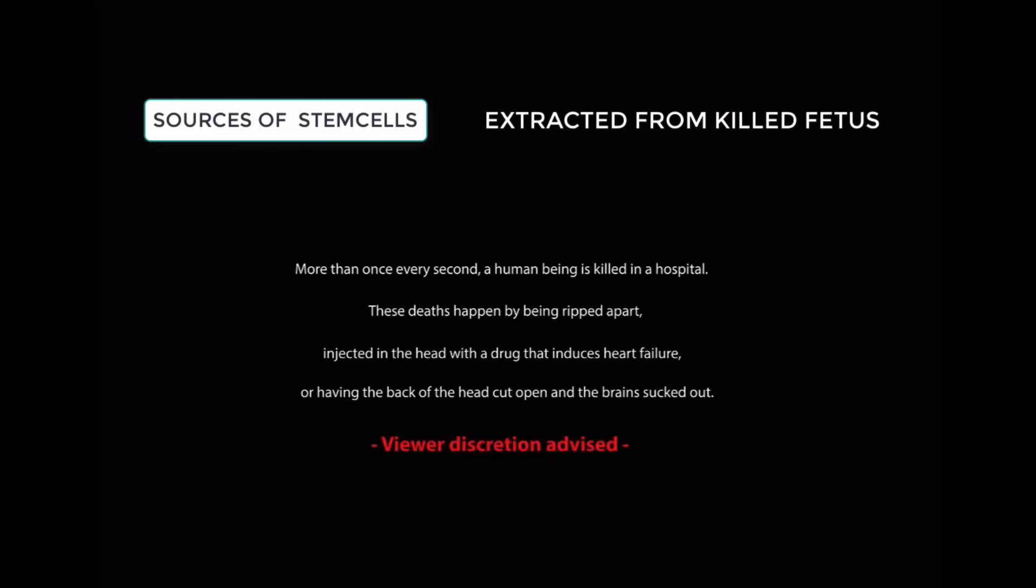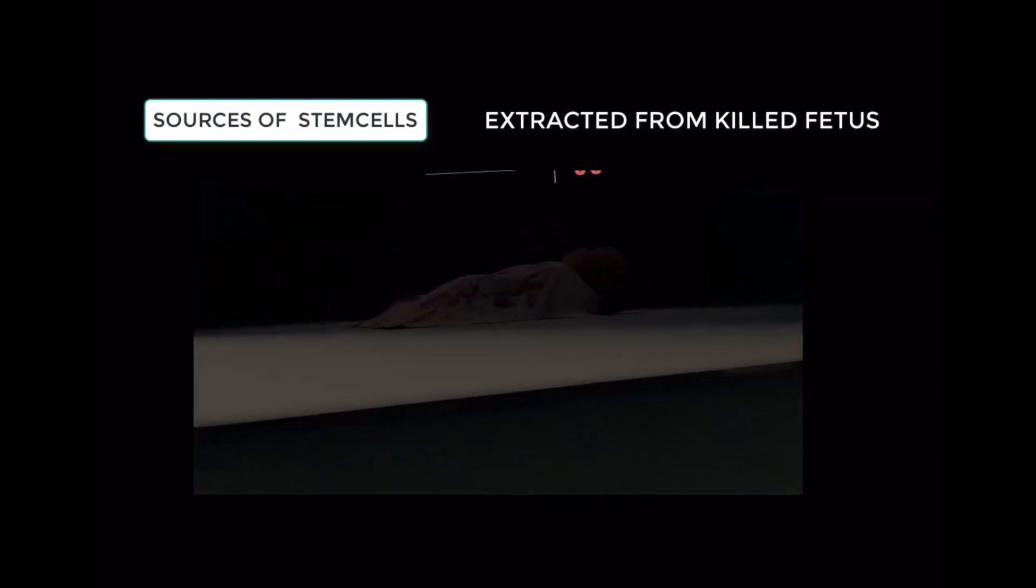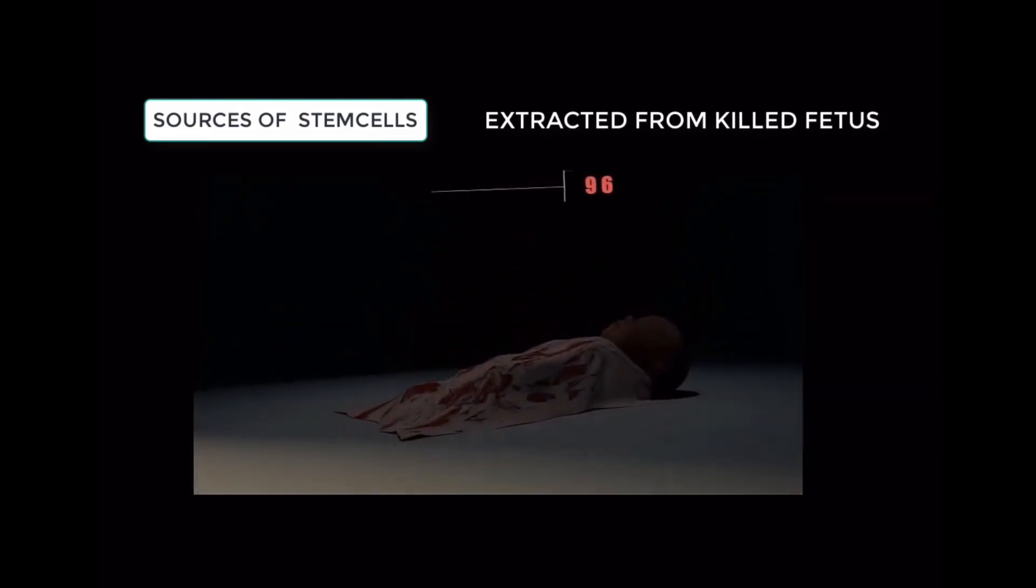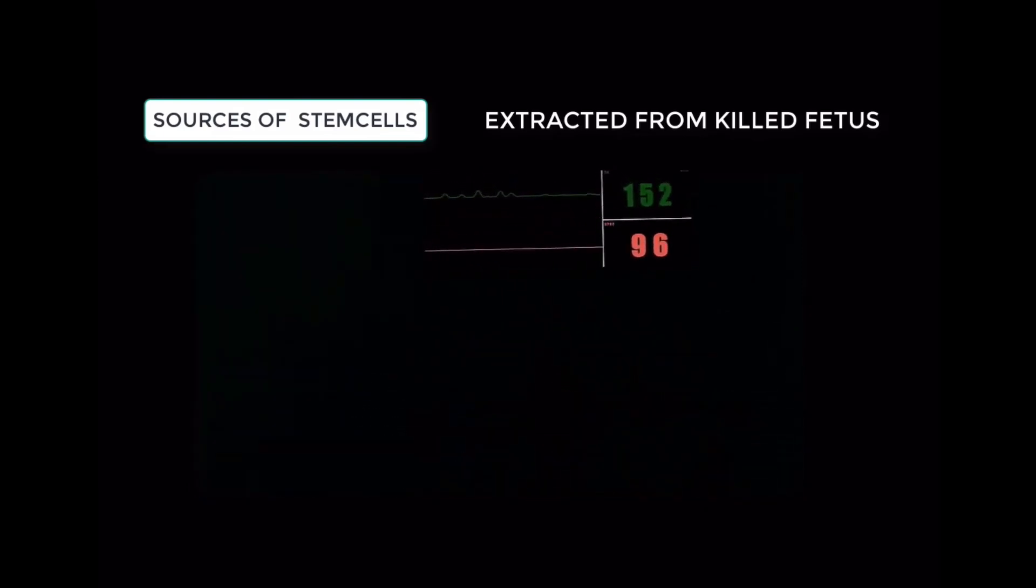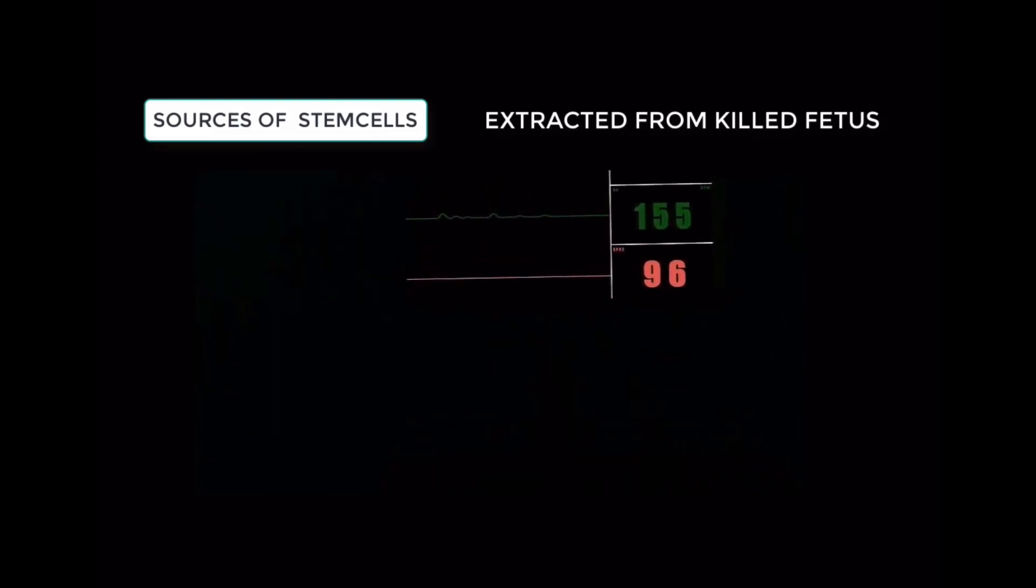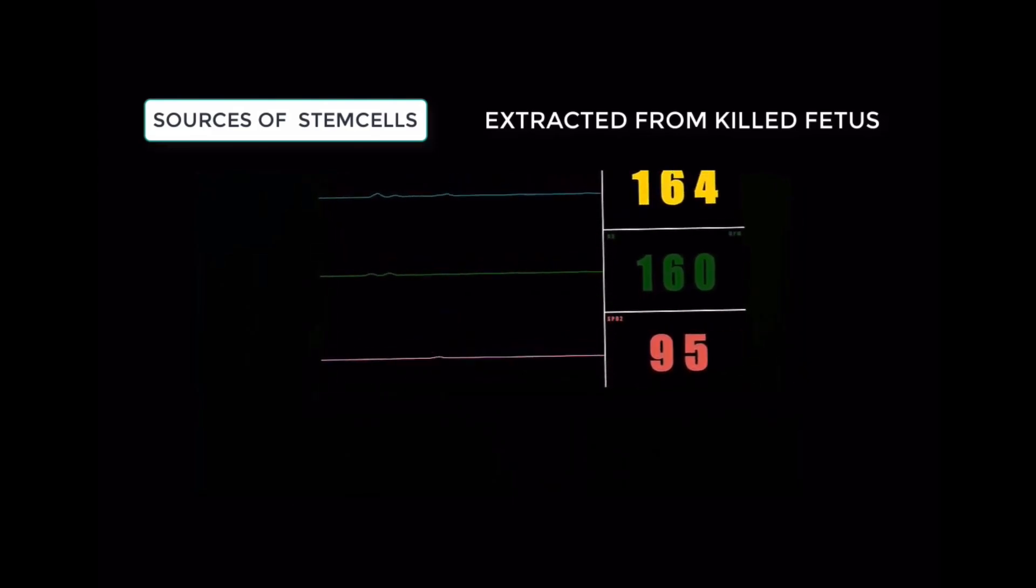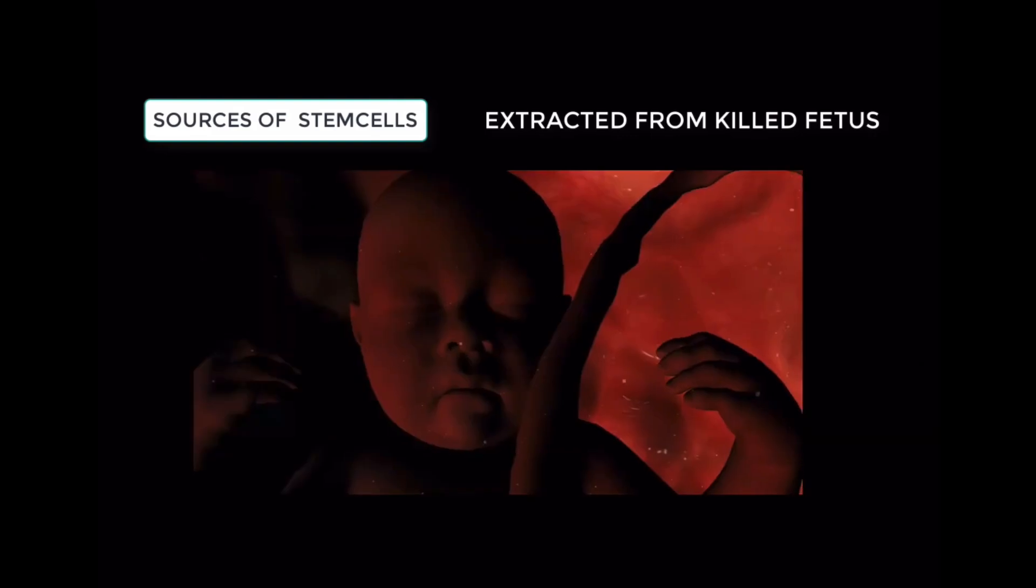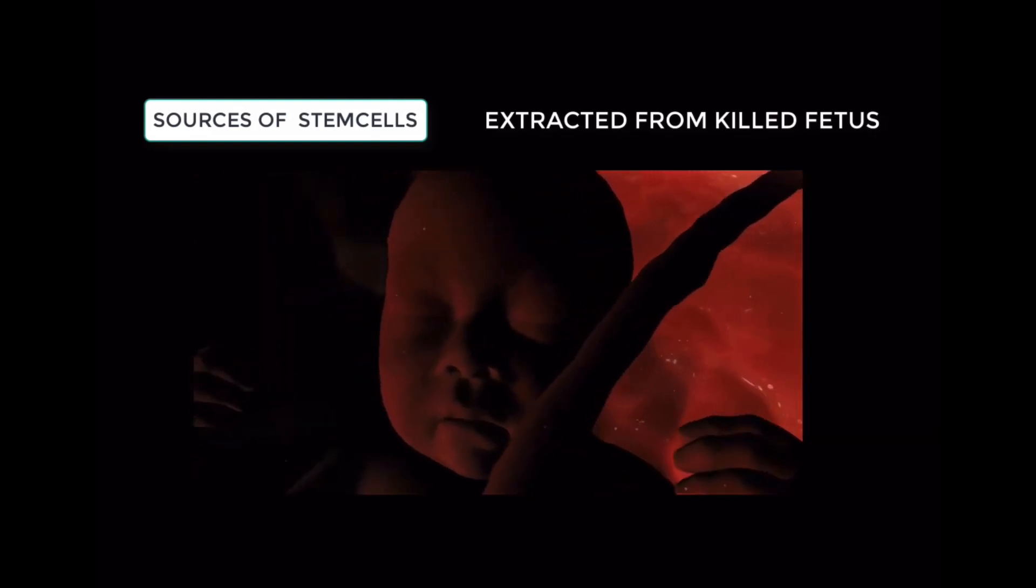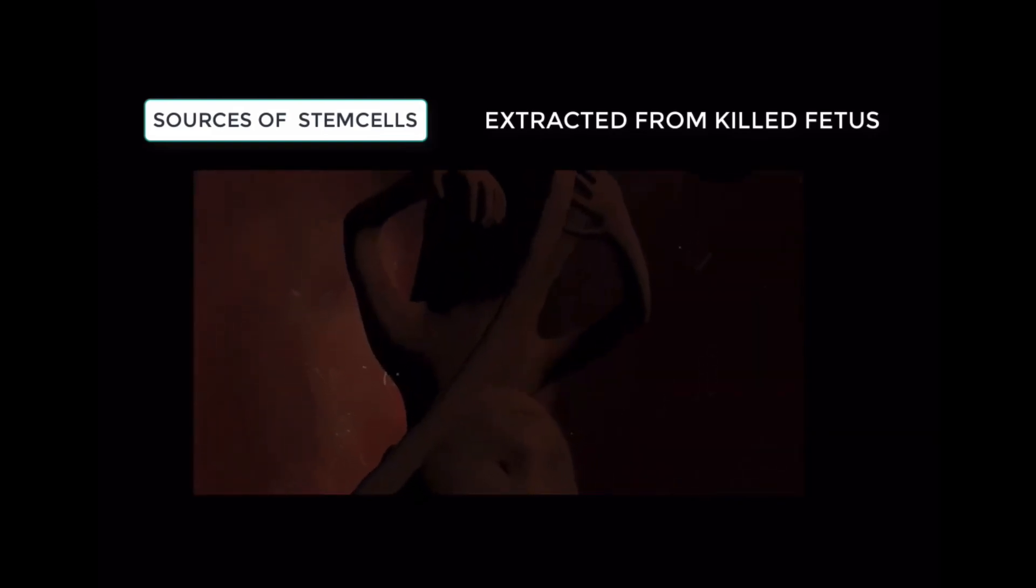Now there seems to be a logic that the earlier you can get to these stem cells, the more life force they have, the more potent they are, the more possibilities there are to do different things with them. So if you go from the cord blood and take it one step earlier, then these stem cells are in the fetus. If you take it one step earlier than that, then these stem cells are in the fertilized egg. This is part of the purpose of the clip: to show you that even aborted fetuses are a source for these stem cells.